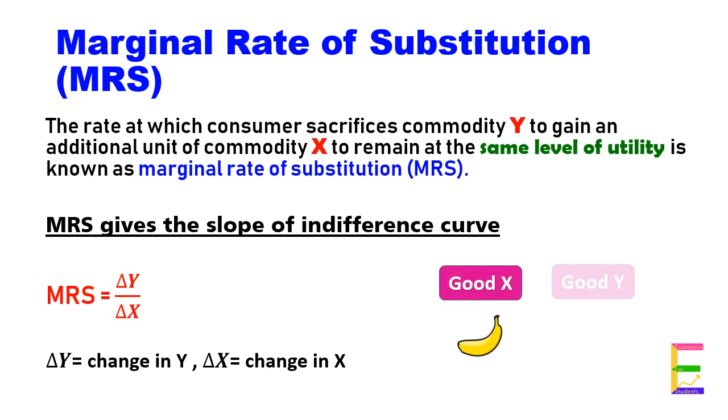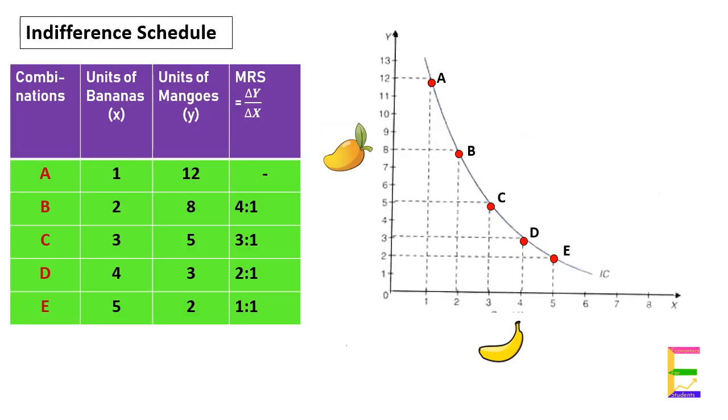Let us assume good X is banana and good Y is mango. We will consider this indifference schedule of a consumer which shows five different combinations of bananas and mangoes, A, B, C, D, and E, which give equal satisfaction to the consumer and are on the same indifference curve IC.